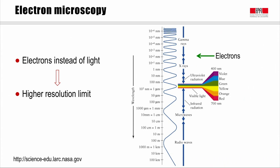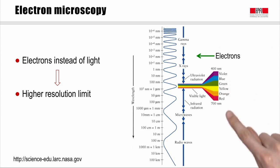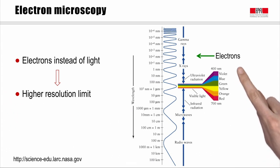The first approach for observing the macrostructure is the use of an optical microscope using light as the source of emission. However, the resolution of light microscopy is limited by the wavelength of visible light, between 400 to 800 nm. The wavelength of electrons is actually much smaller, around 1 to 10 picometers, which permits observing much smaller objects and achieving a much better resolution.